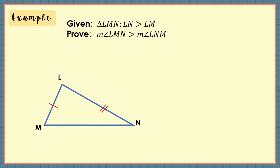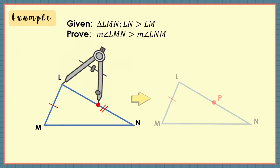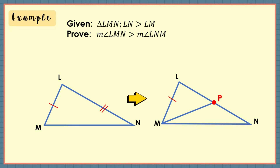We need to make additional constructions to prove this statement. With a compass point on vertex L and with radius LM, mark a point P on LN and connect points M and P with a segment to form a triangle. Then, name angles 1 and 2 of triangle LMP and angle 3 of triangle LMN.